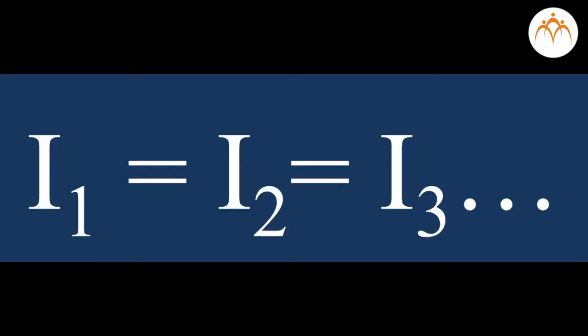Current, the rate at which charge flows, is everywhere the same. It is the same at the first resistor as at the last resistor, as in the battery. I equivalent equals I1 equals I2 and so on.